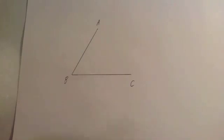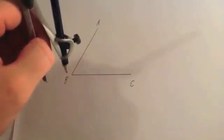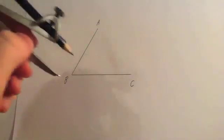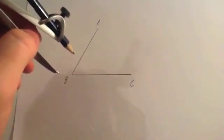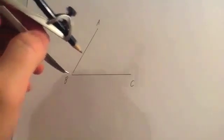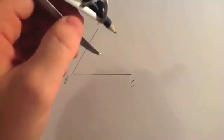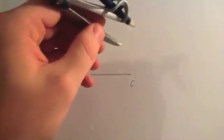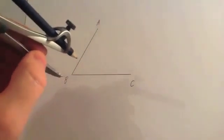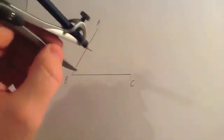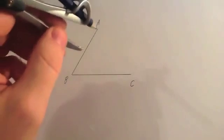We're now going to look at how to do an angle bisector. An angle bisector is a line that cuts an angle exactly in half. So, for instance, if you had a 60 degree angle, it would cut the angle in half, and you'd have 30 degrees on one side and 30 degrees on the other side. Every single point on the angle bisector is an equal distance from the line on either side.